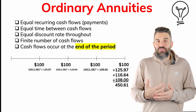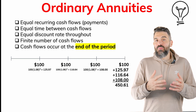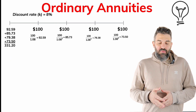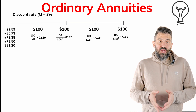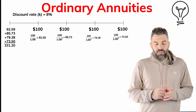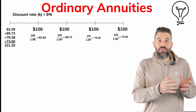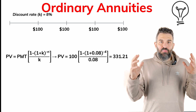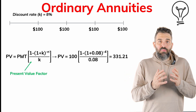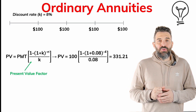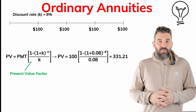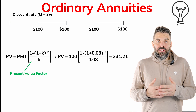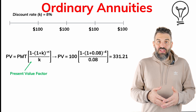For the future value, I could also find the FV of each individual payment and add them up, but that takes time, so we have a formula for that too. For example, with equal payments of $100 every year for four years at an 8% discount rate, discounting each individually gives a present value of $331.21. Using the formula — payment multiplied by the present value factor, which is (1 minus (1 plus r) to the power negative n), all divided by r — you get the exact same result: $331.21.